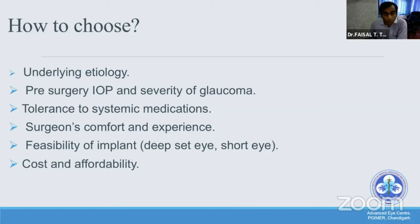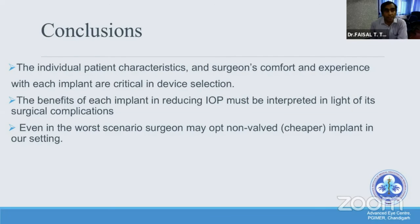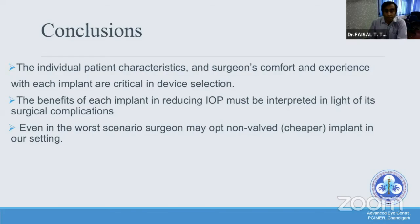In summary, the factors to consider before choosing an implant are: the underlying etiology, pre-surgery IOP and severity of glaucoma, tolerance to systemic medication, surgeon's comfort and experience, and cost and affordability. To conclude, as mentioned in various studies, individual patient characteristics and the surgeon's comfort and experience with each implant are critical in device selection. The IOP benefit of each implant must be balanced against associated surgical complications. Even in the worst-case scenario, surgeons may be compelled to opt for a non-valve device in the Indian context because most patients come from a low socioeconomic background. Thank you for giving me this opportunity.